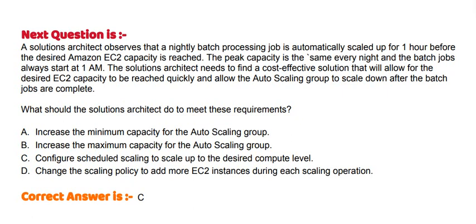Option A: Increase the minimum capacity for the auto-scaling group. Option B: Increase the maximum capacity for the auto-scaling group. Option C: Configure scheduled scaling to scale up to the desired compute level. Option D: Change the scaling policy to add more EC2 instances during each scaling operation.